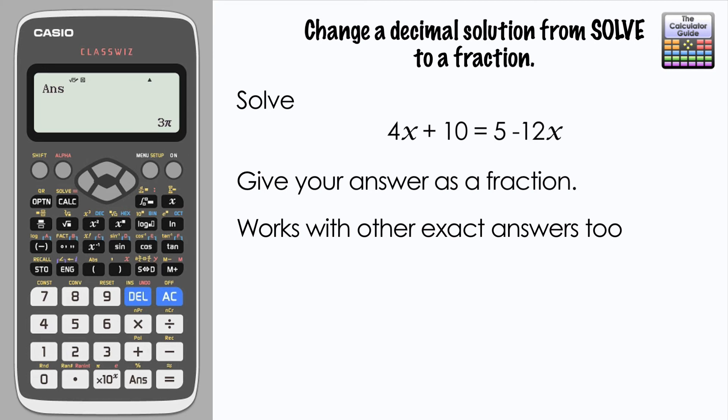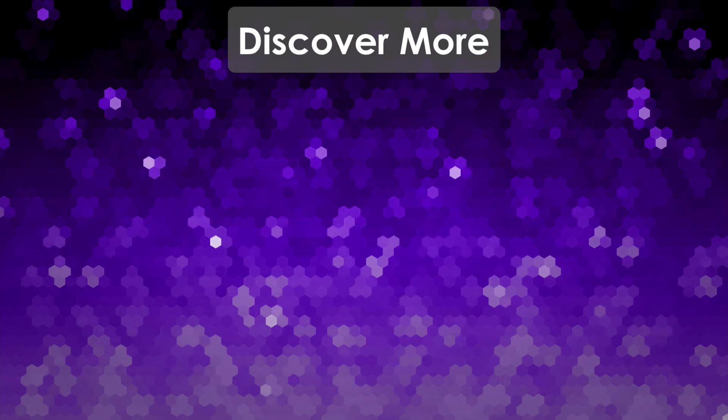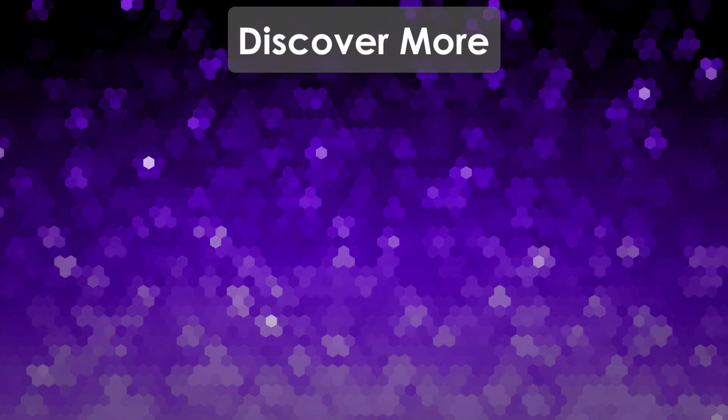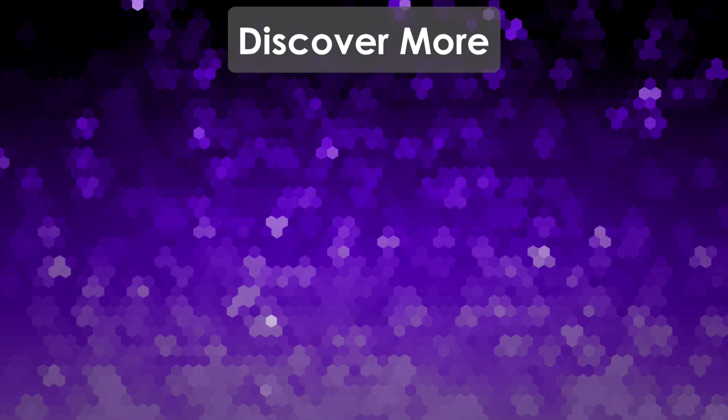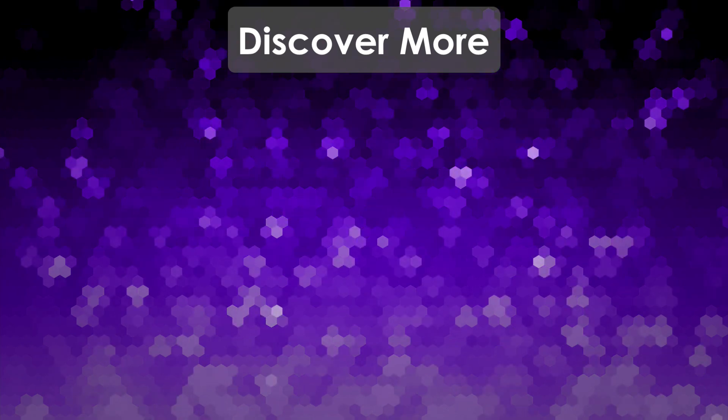So if the calculator is able to recognize the answer that's given as exact value, you can just press ANS and that will change it from the decimal display to the exact value. So there we go, how we can change from the decimal solution to a fraction or an exact answer if required. But that's it for this video. Thank you very much for watching, and I'll see you next time on The Calculator Guide.